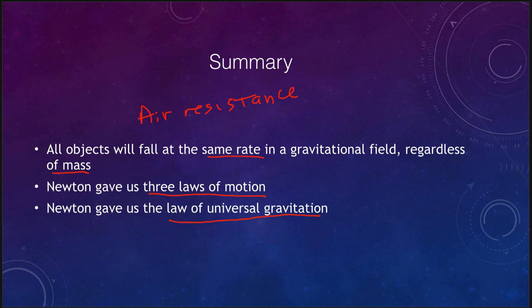To summarize this lesson: we looked at Galileo's finding that all objects fall at the same rate in a gravitational field. On Earth, air resistance complicates this, but on the moon it holds true as shown by the Apollo 15 demonstration. Newton gave us his three laws of motion and the universal law of gravitation, which led to a modification of Kepler's third law allowing us to determine the masses of objects in the universe. That concludes our summary of Newton and our understanding of gravity — see you next time.